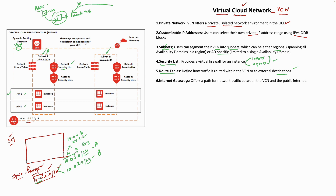An Internet gateway offers a path for network traffic between the VCN and the public internet. If you have created a VM instance and want it connected to the internet directly, you need to go via the internet gateway. So it offers a path for network traffic between the VCN and the public internet, and that is done through the internet gateway.